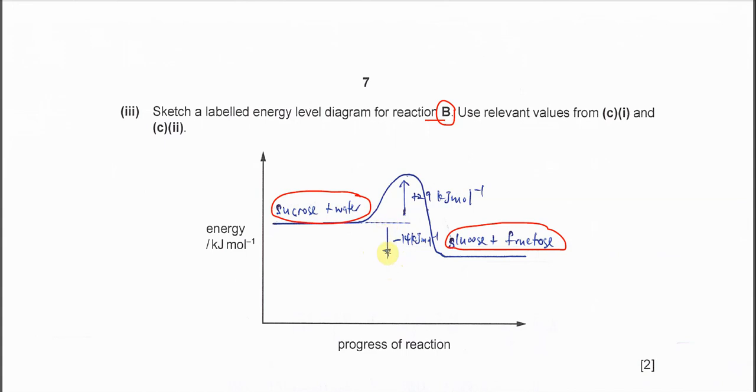So the delta H is -14 kJ/mol, pointing down to form the products here. And you have to put the EA. Just point it up and put this 29 here, 29 kJ/mol. This is the EA for reaction B which happened together with enzyme.